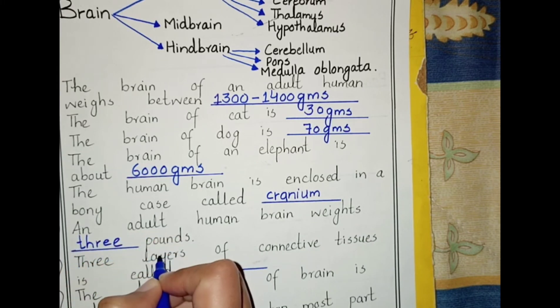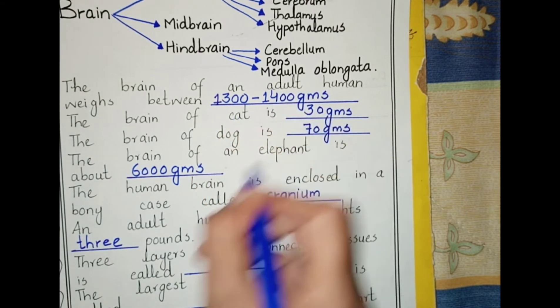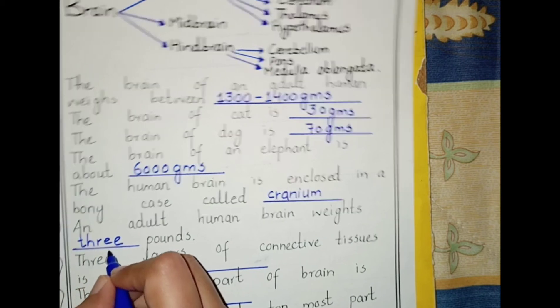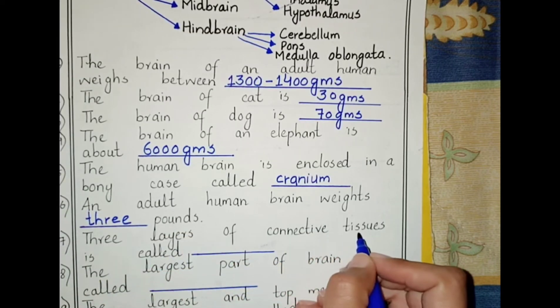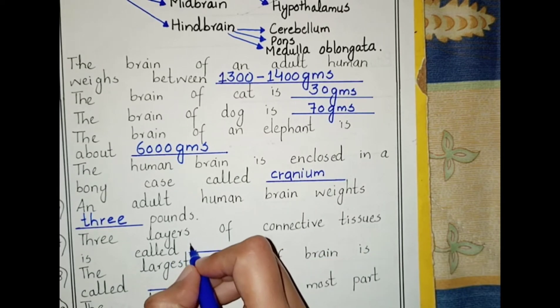The human brain is enclosed in a bony case called the cranium. An adult human brain weighs three pounds, or in grams, 1300 to 1400 grams. Three layers of connective tissues present in the brain are called meninges.